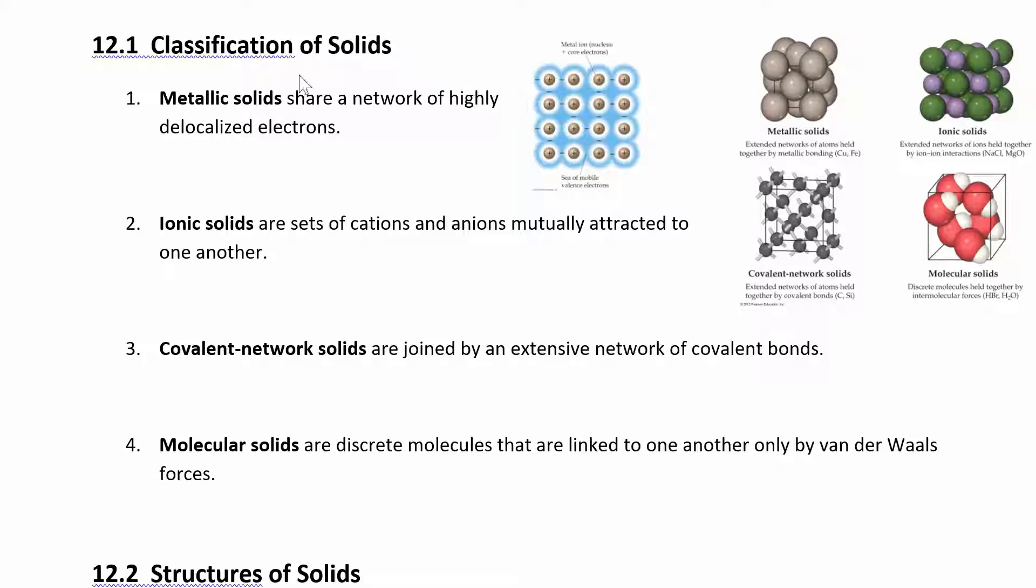If they're made of metals, you're going to have a metallic solid. If they're made of an ionic compound, if you have ions involved, then you're an ionic solid. Covalent network, those are kind of specific. You have like diamond is a covalent network solid. You have covalent bonds actually holding the atoms in place.